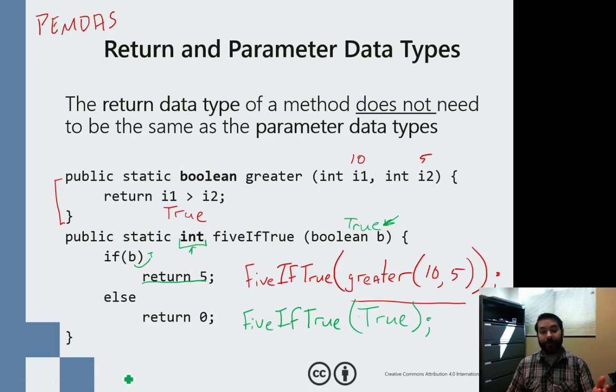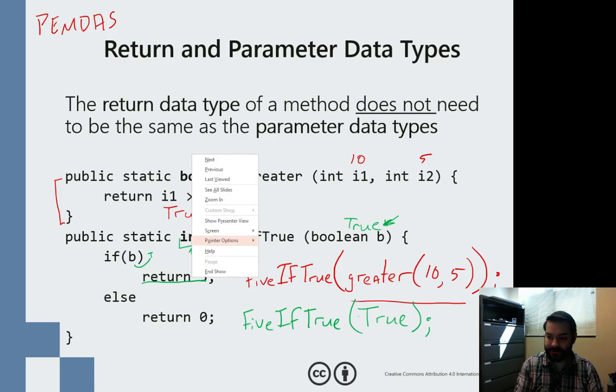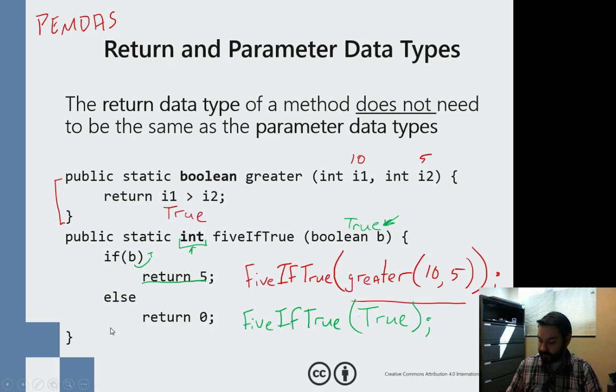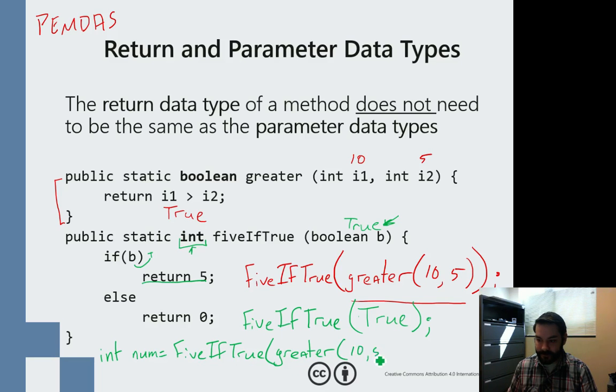So the full sentence, the full sentence if I wanted to actually use this inside of my code, would be int num equals 5ifTrue greater 10, 5.